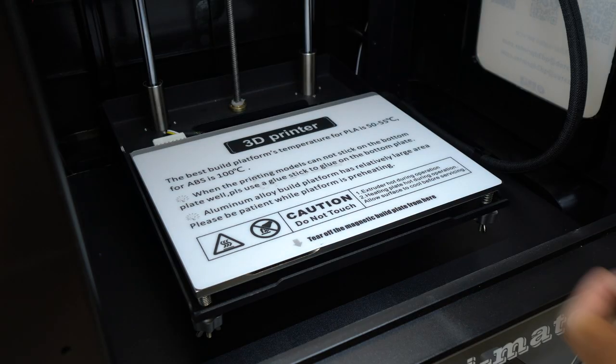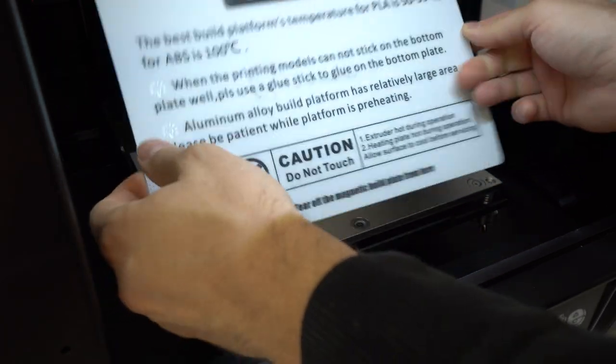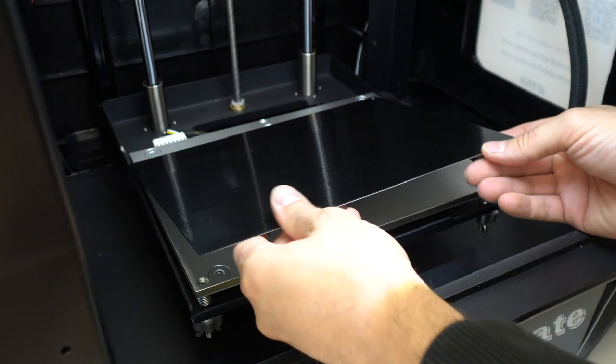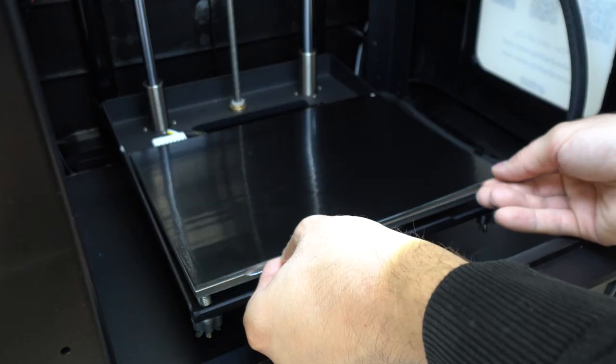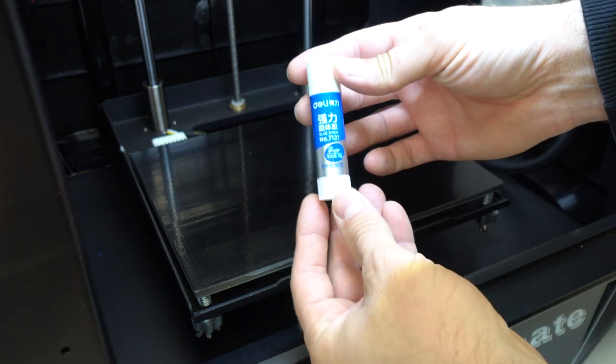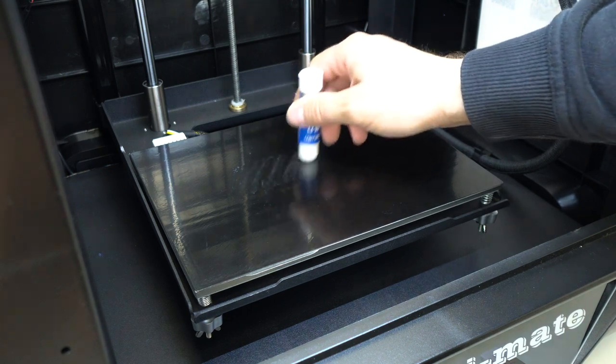Now the build plate itself is made of steel sheet and it can be used in two ways. On one side there is a BuildTak printing surface which is suitable for PLA, PETG, TPU and ABS prints. While the other side of the build plate with a combination of glue stick is meant to be used for filaments like nylon, polycarbonate and etc.